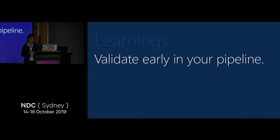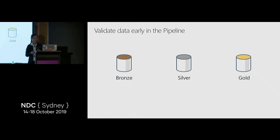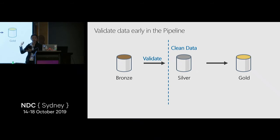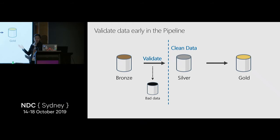This brings me to the first learning: validate early in your pipeline. You want to validate right before you move data into the silver tier. That way, once data is silver and onwards, you can write code with certain assumptions — data invariants your validation logic guarantees — such as this column always has this set of codes, or these columns will never be null. Rows that fail validation should go into a malformed record schema with monitoring in place.